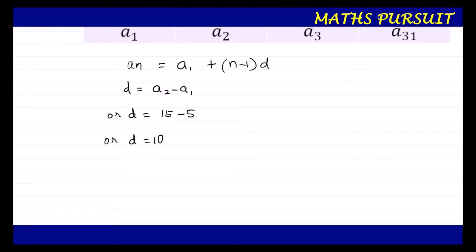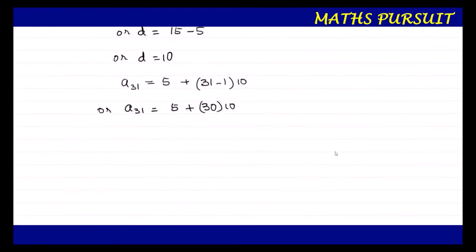We are going to find the value of the 31st term, so the value of n is 31. Using the formula: a31 = a1 + (n − 1) × d = 5 + (31 − 1) × 10 = 5 + 30 × 10 = 5 + 300 = 305. So we got the value of a31 = 305. This is an important result that we will use next.